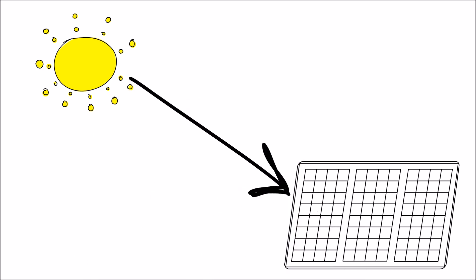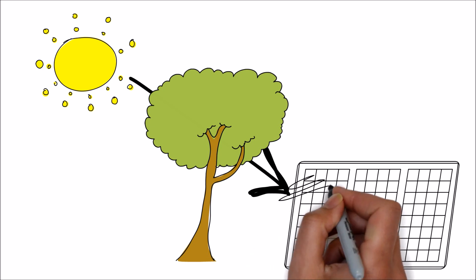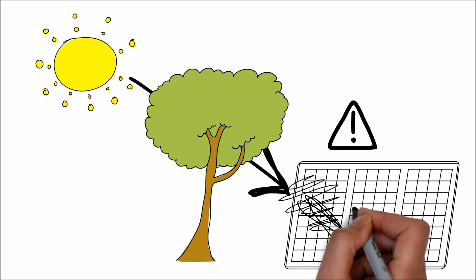This is the ideal situation for a string inverter. Let's say there's a tree and the tree's shade is falling on one of these solar panels. It's not just that solar panel that's getting affected, it's actually the whole entire system.